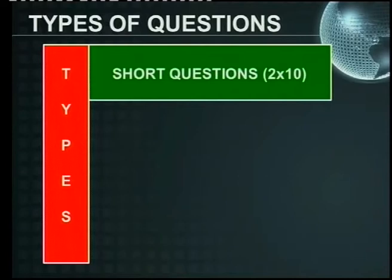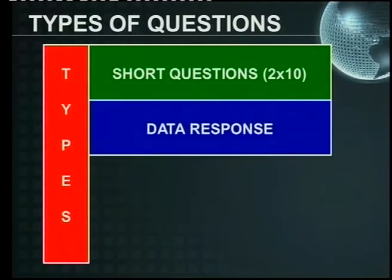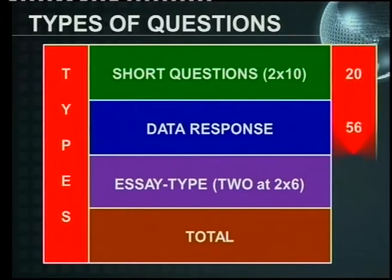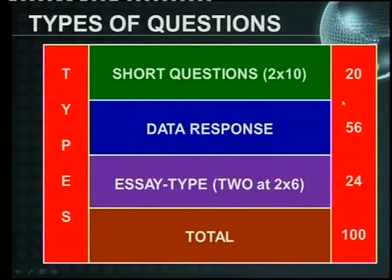The first one would be your short questions. You're going to get two sets in every question — two times ten. You're going to get data response questions, and then you're going to get two essay type questions that you must write in every question. The total will look like this: short questions will be 20 marks, data response 56 marks, essay type two in each question 24 marks, totaling 100 marks per question.